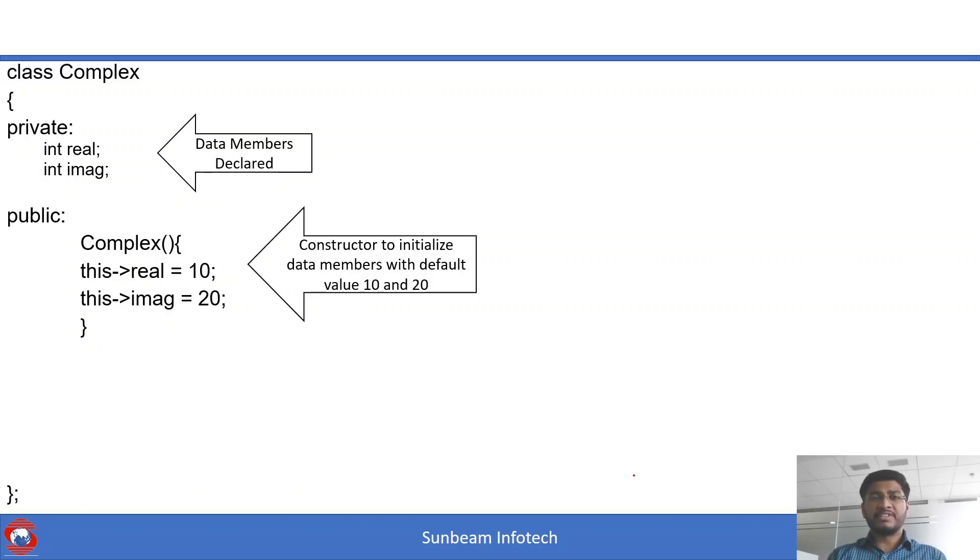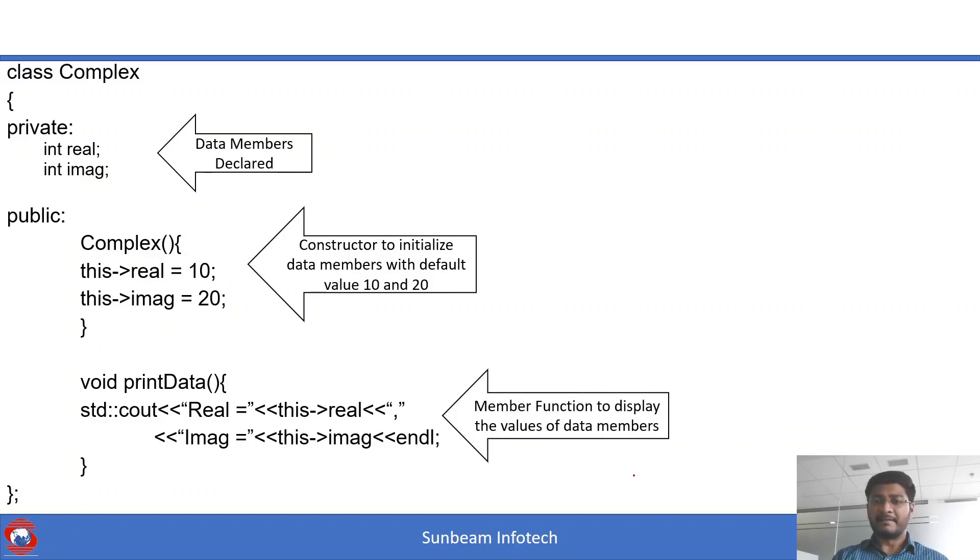To see what are the values of real and imaginary, to display it onto the console, we are going to write this facilitator function. This is again a member function print data. Now let us come down to the main and let us create an object of this class. The moment we are going to create this object c1, it is automatically going to call this constructor.